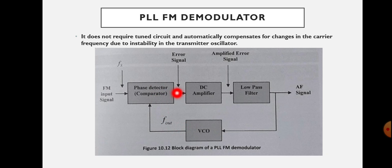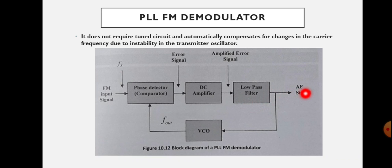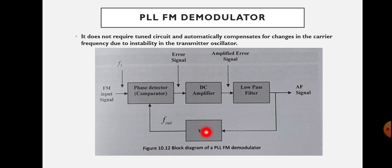The output of the VCO is F-out. The phase detector output is an error signal, and that output is given to the DC amplifier. The amplified error signal is obtained and given to the low pass filter. The output of the low pass filter is the audio frequency signal or original modulating signal, and that audio frequency signal is again given to the voltage controlled oscillator, which provides the input to the phase detector.